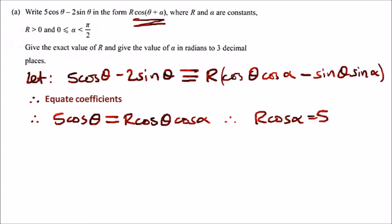Likewise, we repeat the same process for sin θ. Since they both have negatives we can ignore that and say 2 sin θ on the left equals r sin θ sin α on the right. Eliminating the sin θ leaves us with r sin α = 2.